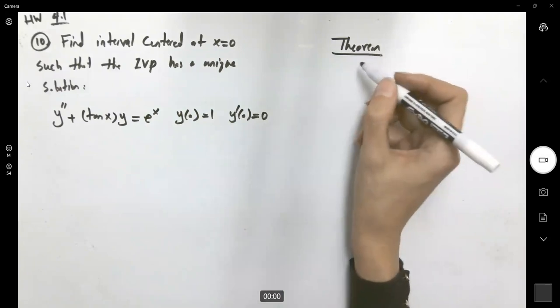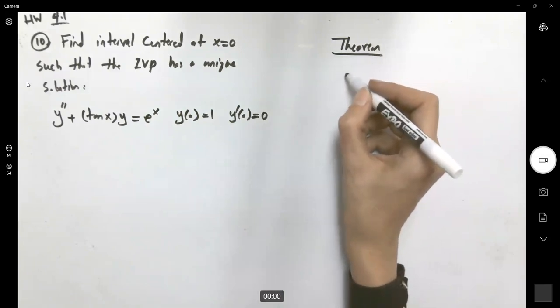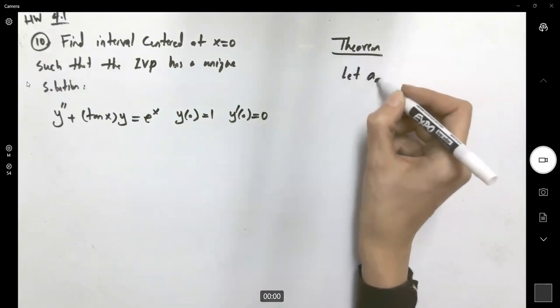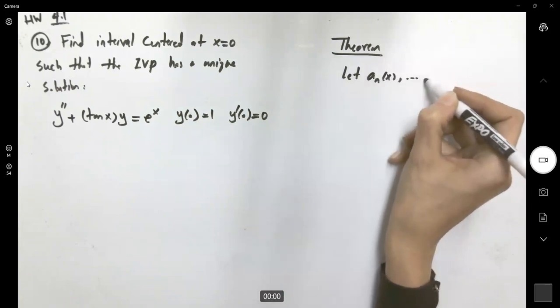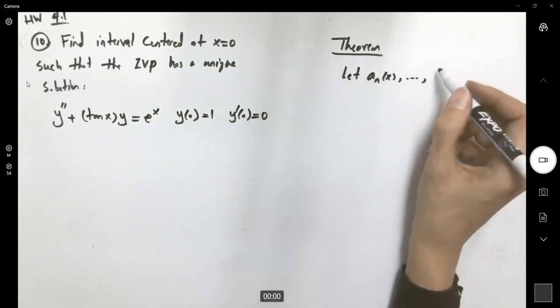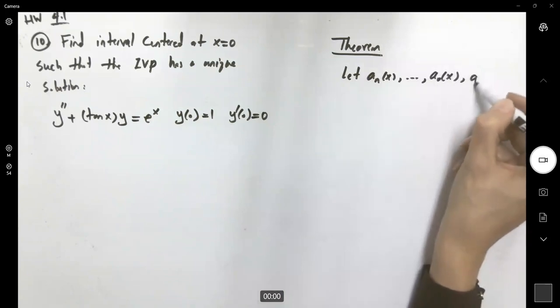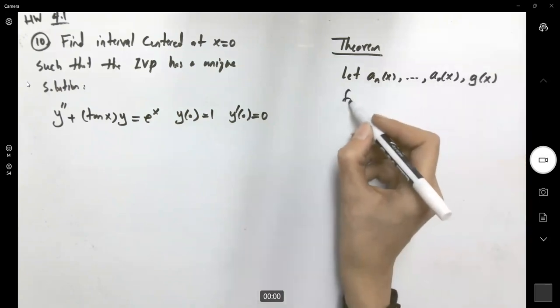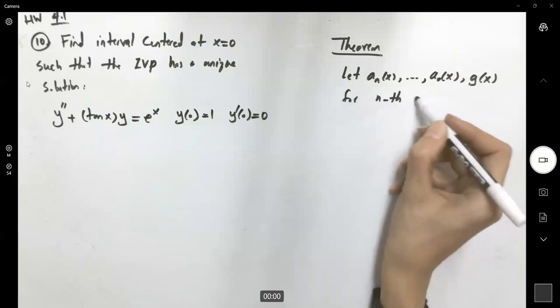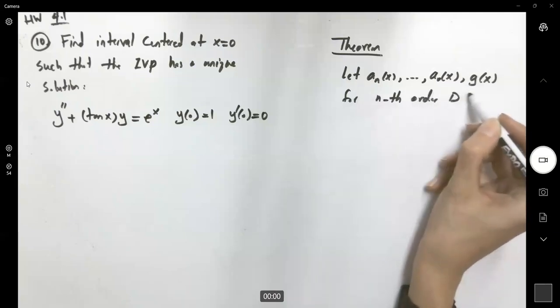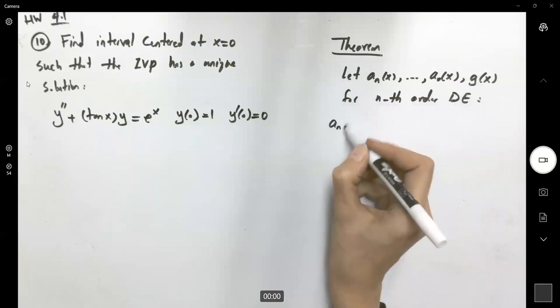For an initial value problem, let a_n(x) and the rest of the coefficients through a₀(x), and also g(x), for the nth order differential equation.